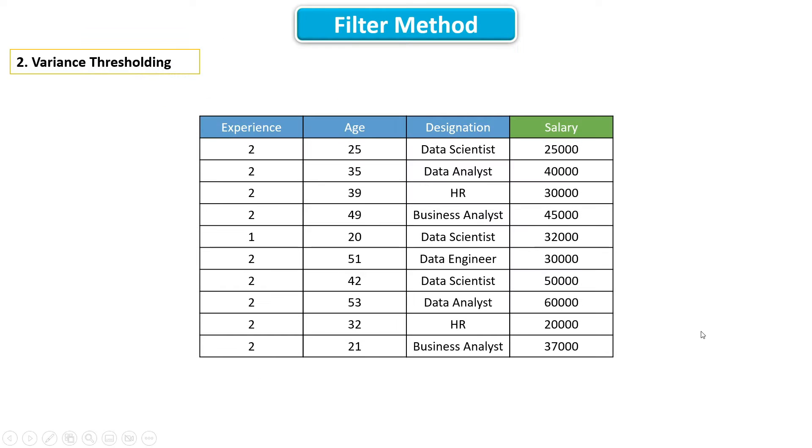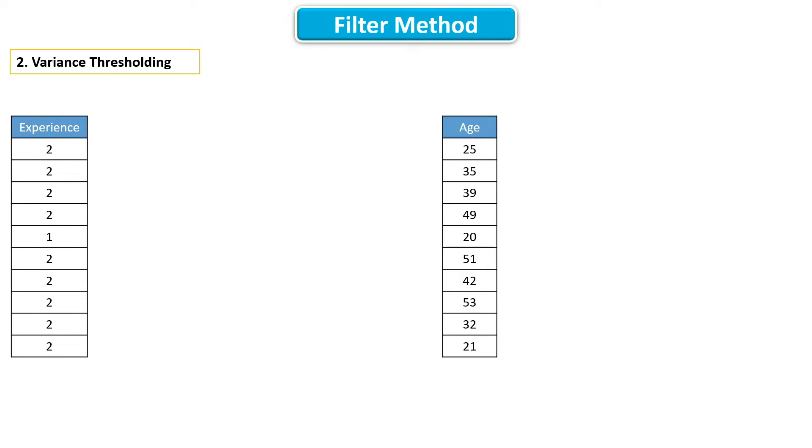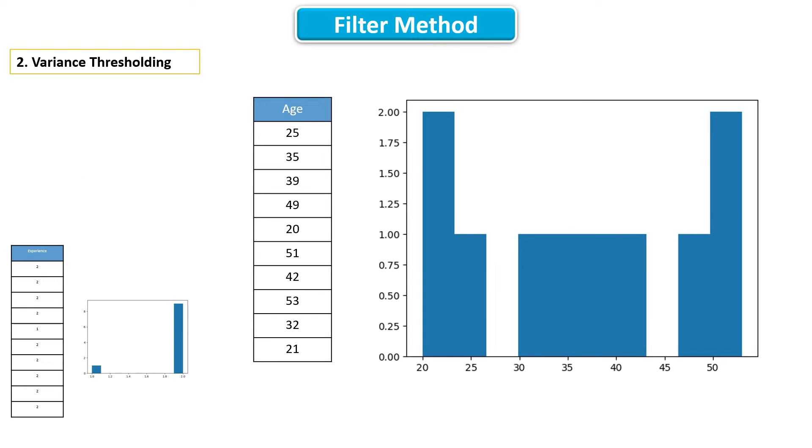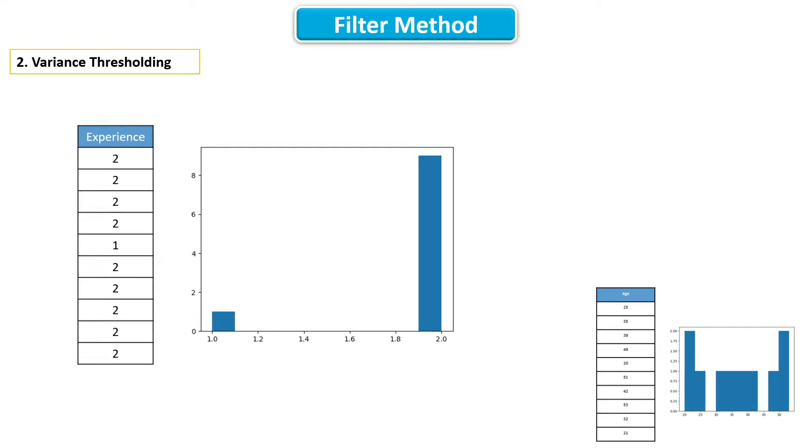The idea behind variance thresholding is very simple. Take all the numeric features and look at their variability. If a feature has high variability, it indicates that it carries more information. If a feature has less variability, it indicates that it doesn't carry more information.